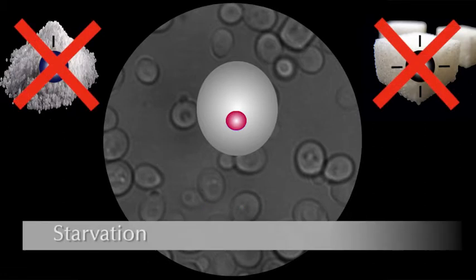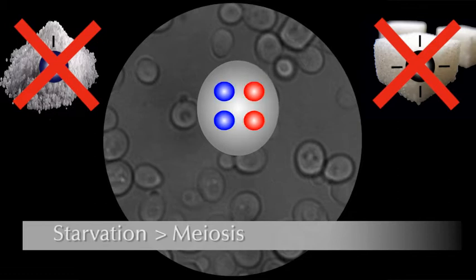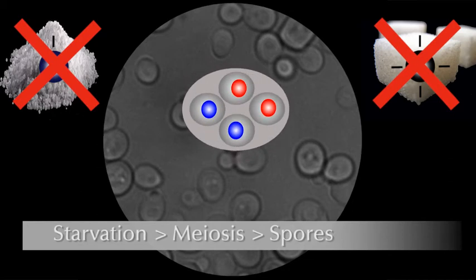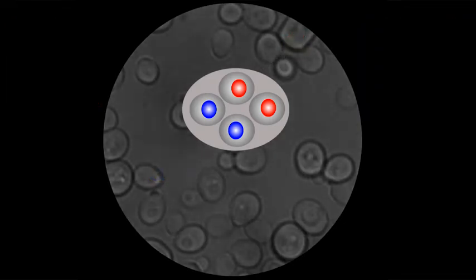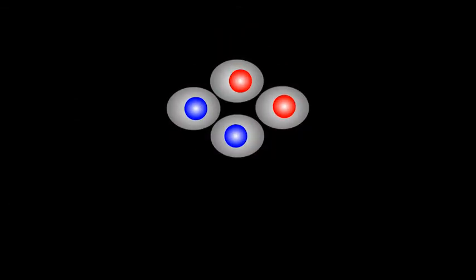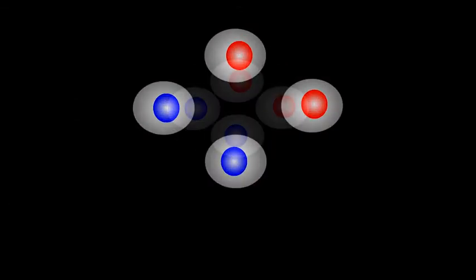Upon starvation, the diploids undergo meiosis. The cells divide and form a small sac that contains four spores — two A and two alpha spores. This structure is known as a tetrad. Once the growth conditions improve, the four spores germinate and grow vegetatively as haploid cells.